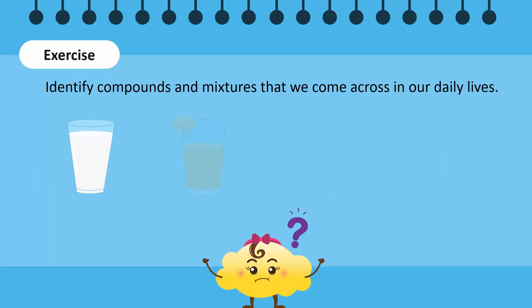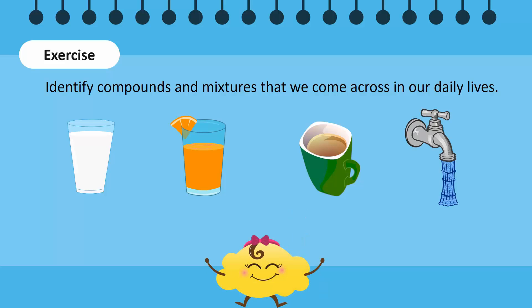Milk, juice, and tea are examples of mixtures. Milk is a mixture of water, proteins, and fats. Whereas, juice and tea are mixtures of water, sugar, and fruit or tea essence. Tap water is a mixture of pure water and some minerals.